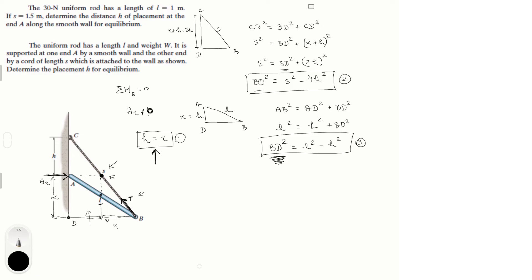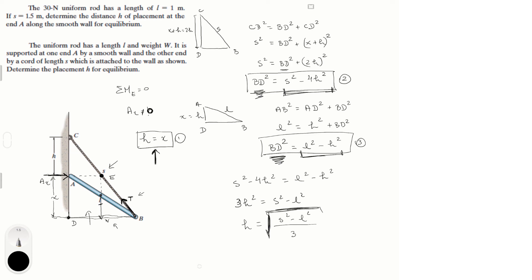Now let's solve for H. Set the two BD² expressions equal: S² − 4H² = L² − H². Adding 4H² to both sides: 3H² = S² − L². Therefore H equals the square root of (S² − L²) divided by 3. This is the general answer for the second part of the problem — H expressed in terms of S and L.